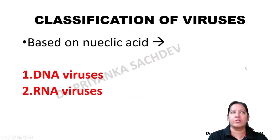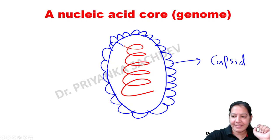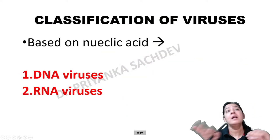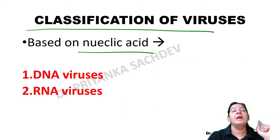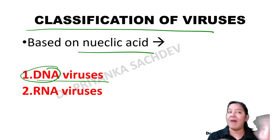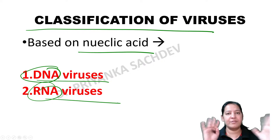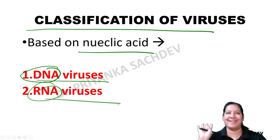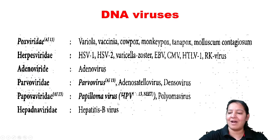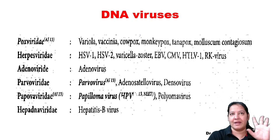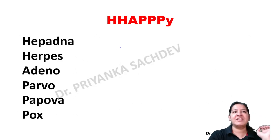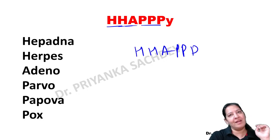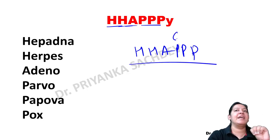Classification of viruses is based on the nucleic acid. Viruses having DNA are known as DNA viruses; viruses having RNA are known as RNA viruses. Either DNA or RNA is present, never both. DNA viruses are only six in number. The mnemonic is HHAPPP: two H, one A, three P. You can remember it as 'happy.' Total six DNA viruses to learn.